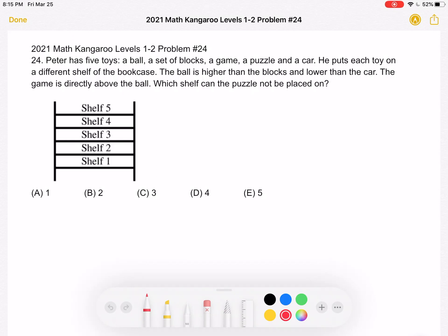Okay, let's start with the statement that tells us exactly where two things are placed in relation to each other. We know the game is directly above the ball.